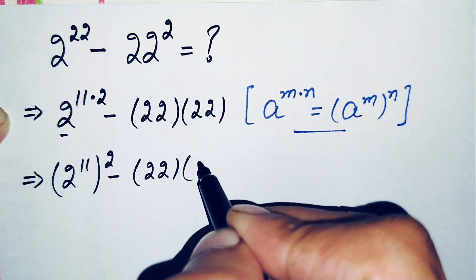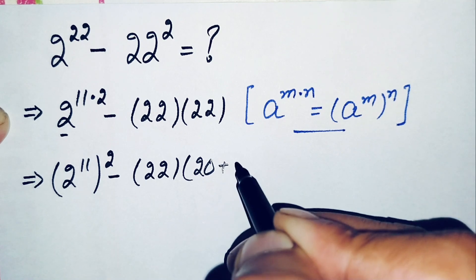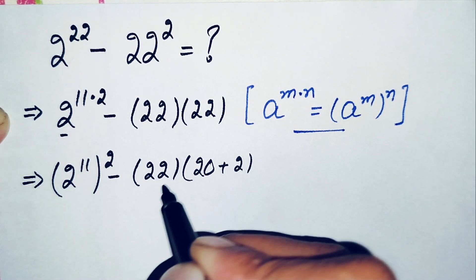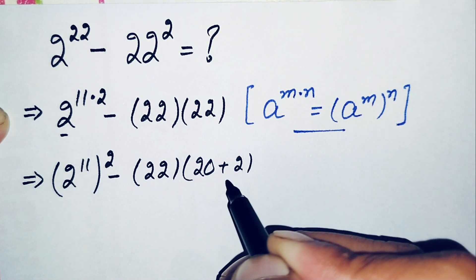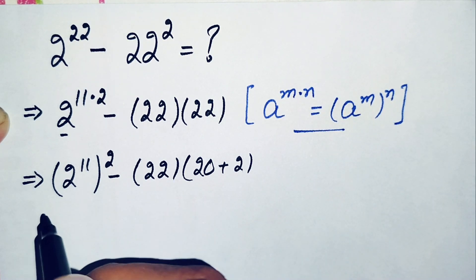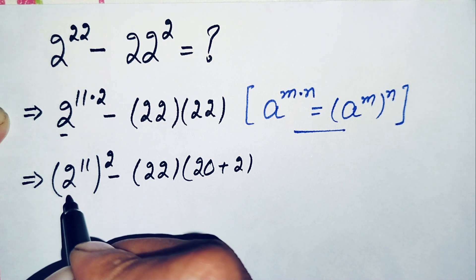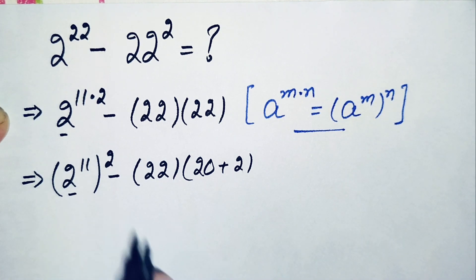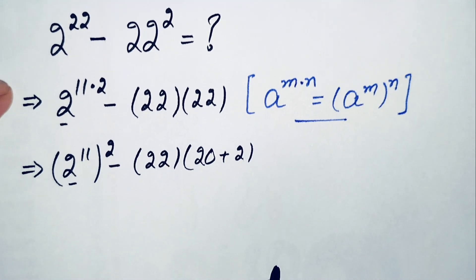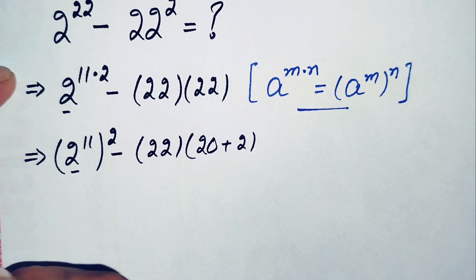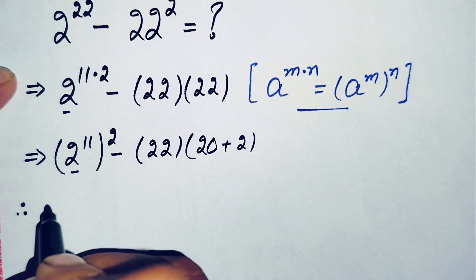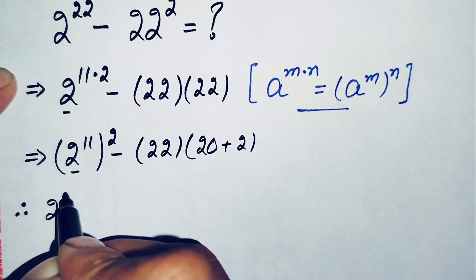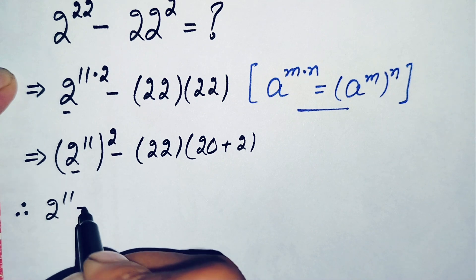Here we can write 22 as 20 plus 2. Now we need to find the value of 2 raised to power 11. So let's determine what 2 raised to power 11 equals.